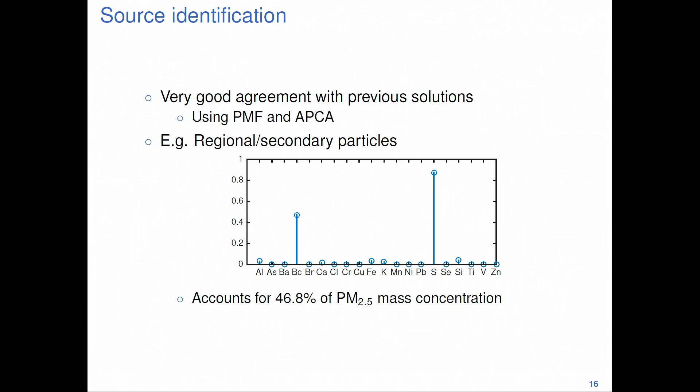One example is the oil and secondary particles source. We have very good contributions of sulfate and black carbon in that source — exactly what we would expect. This source accounts for about 50% of the PM2.5 mass concentration in Boston, again as expected. The other sources also performed well: we identified traffic, crustal particles, residual oil combustion, some salt, and some road dust.